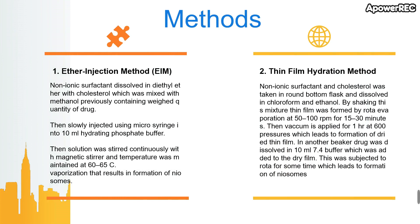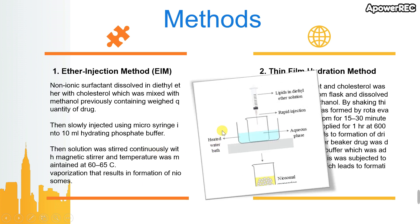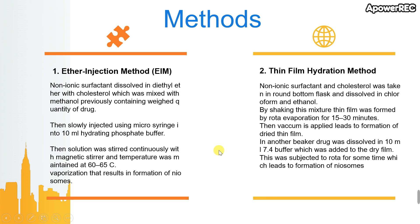In the ether injection method, non-ionic surfactant and cholesterol were dissolved in diethyl ether mixed with methanol containing a weighed quantity of the drug. The resulting solution was slowly injected using a microsyringe at a rate of 1 ml per minute into 10 ml of hydrating phosphate buffer. The solution was stirred continuously with a magnetic stirrer at 60 to 65 degrees Celsius, and after vaporization of the organic solvent, the neosome is formed.